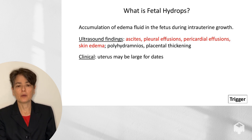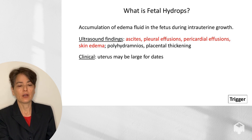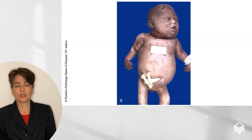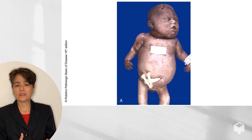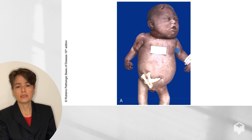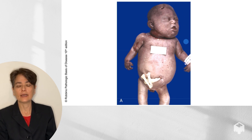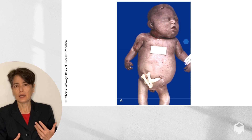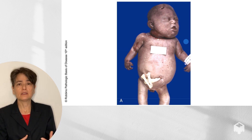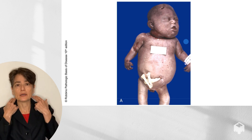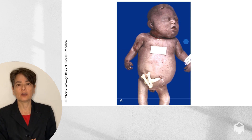Clinically, the uterus may appear large for dates. There is a trigger warning here for friends and family who may want to avert their eyes, because this image shows an intrauterine fetal demise due to fetal hydrops. One of the things we see here is generalized edema — the abdomen is swollen, there is fluid in the neck, and the head is also edematous. It's important to recognize that hydrops exists on a spectrum. We may also see edema in the context of Turner syndrome with a cystic hygroma, which results in the webbed neck characteristic of that condition.